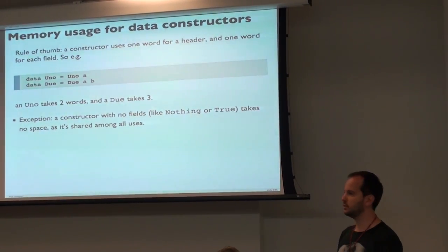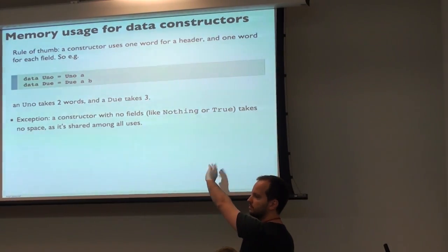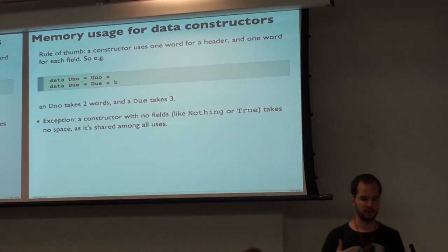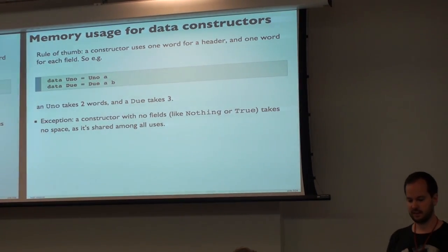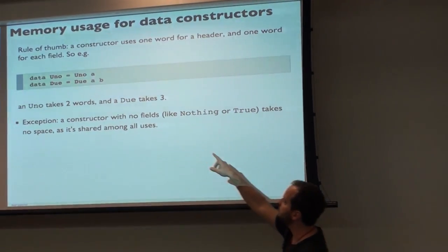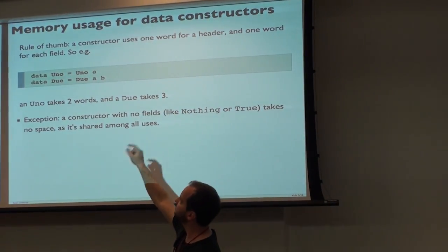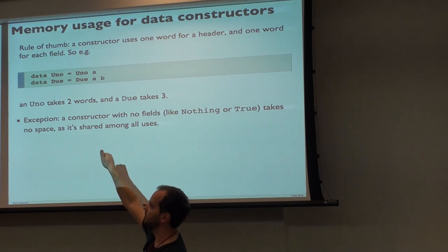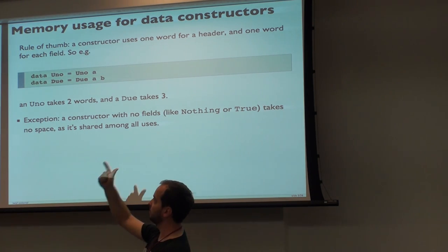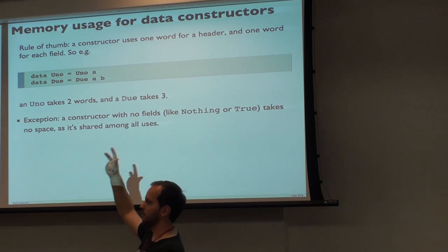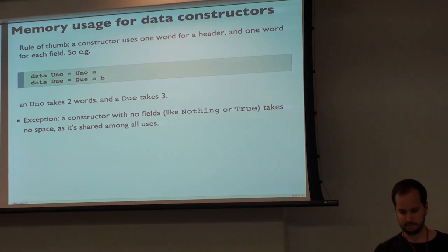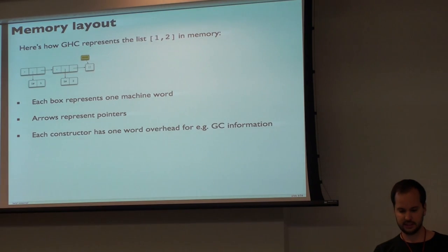So the first field could be like a vector of ints. Obviously the vector of ints is not one word, but a pointer to that value. So if you apply this recursively, you go to this data type. Let's say one for the constructor, one for the pointer to A, and then you go down. One for the constructor to the sub-node. So that's a rule of thumb — that's the first thing you need to know.